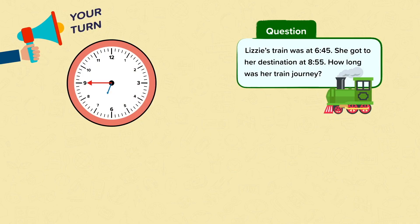Now it's your turn. Lizzie's train was at 6:45. She got to her destination at 8:55. How long was her train journey? Pause the video if you need time to think.